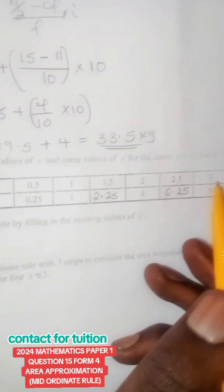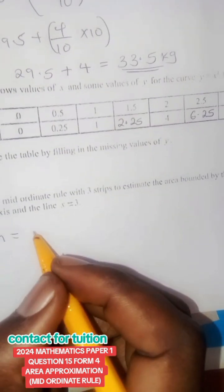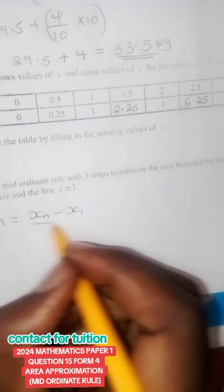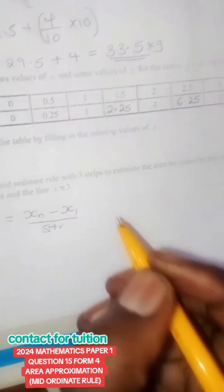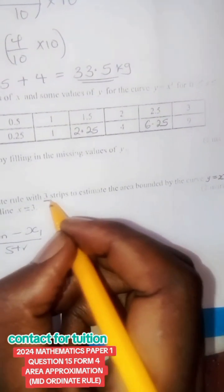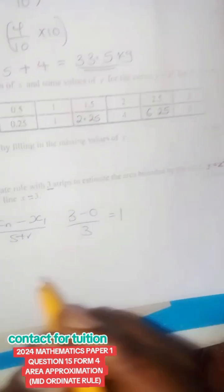To find height, we are going to take the last value in x and the first value in x. That is the formula: xn minus x1 over the strips. Therefore, that is 3 minus 0 divided by 3. The number of strips have been given as 3, so we have our height as 1.